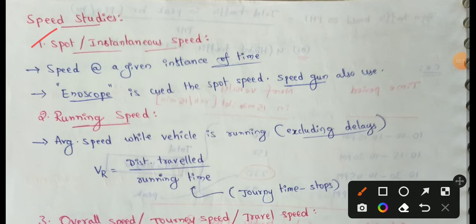Spot speed is the speed at a given instant of time — the instantaneous speed of a vehicle at a specified location. To measure spot speed, we use an enoscope or speed guns.